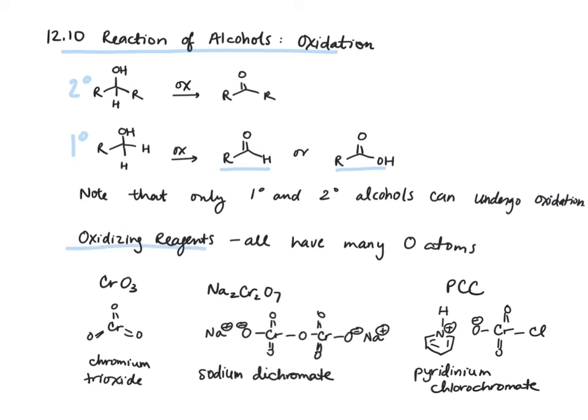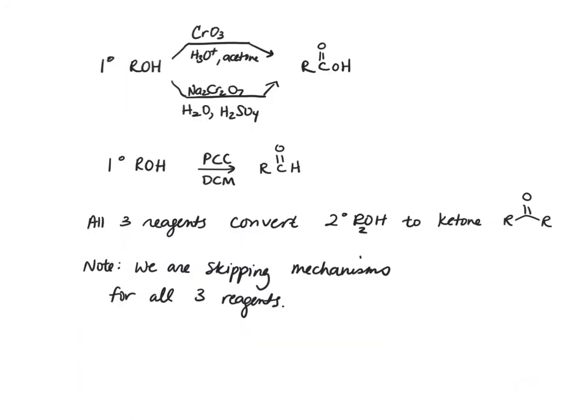For oxidizing reagents, what you're looking for is reagents that have a lot of oxygen atoms. For example, we have chromium trioxide, sodium dichromate, and pyridinium chlorochromate. These are all three oxidizing agents that we can use to oxidize alcohols. With chromium trioxide and sodium dichromate, we end up producing a carboxylic acid. And with pyridinium chlorochromate, for a primary alcohol, we stop at the aldehyde, so it's not as oxidizing of a reagent as the chromium trioxide and the sodium dichromate.